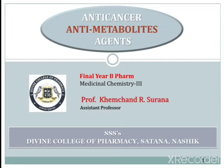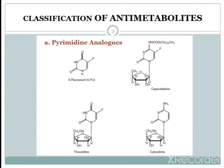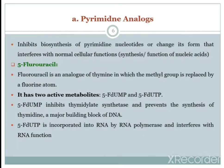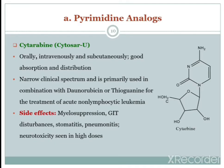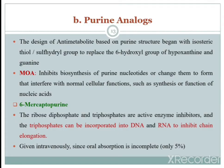Hello everyone, myself Professor Khemchand Surana. In the last session we started with anti-cancer anti-metabolite agents, where we covered what anti-metabolite agents are and their classification. There are three subclasses: purine analogs, pyrimidine analogs, and folic acid analogs. In the previous session we discussed pyrimidine analogs including 5-fluorouracil and cytarabine — their mode of activation and metabolism.